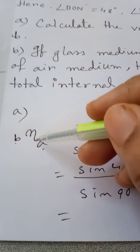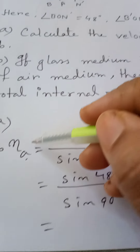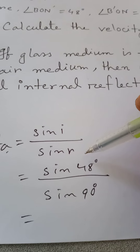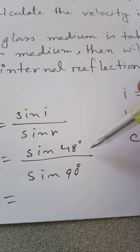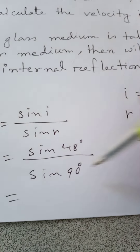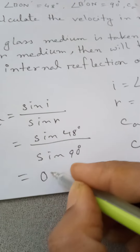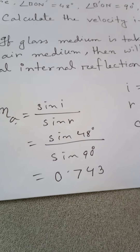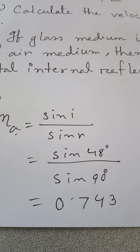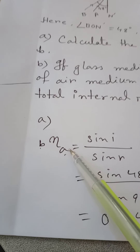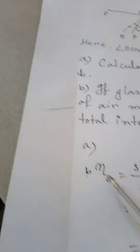Now the formula — the refractive index is denoted by n. Here, bna equals sine i divided by sine r. So sine 48° divided by sine 90° — after calculation it comes to 0.743. So the refractive index bna, that means the refractive index of medium A with respect to medium B, equals 0.743.